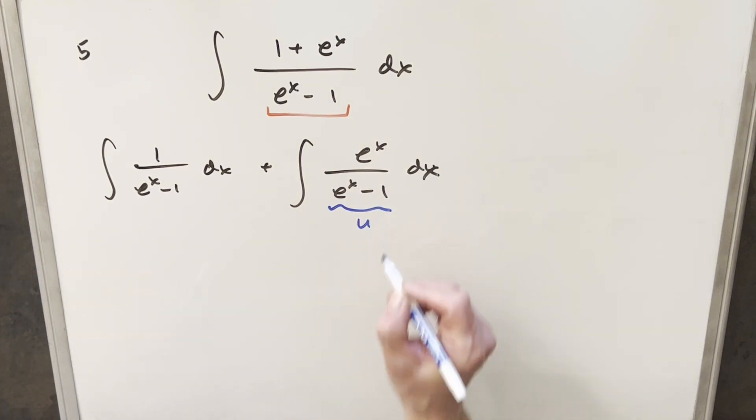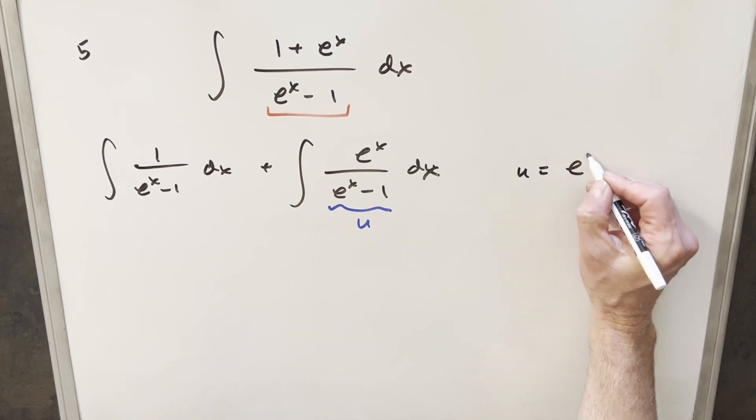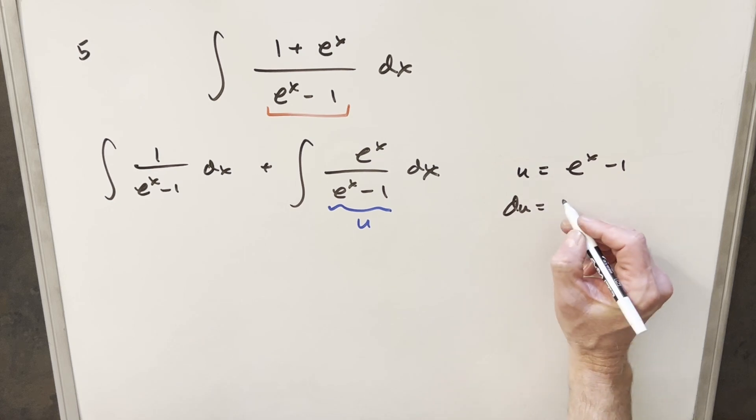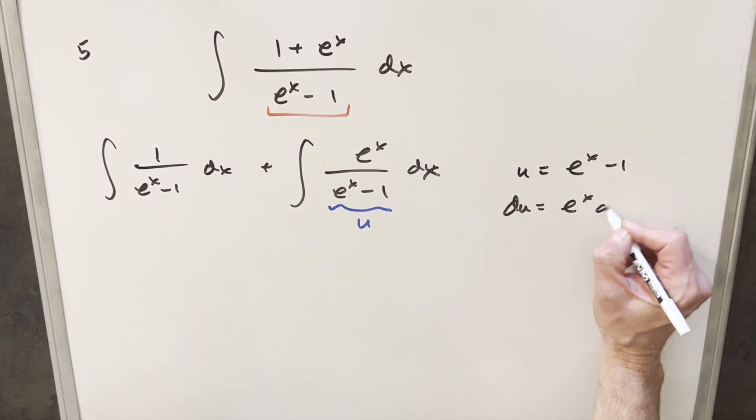So for this one, we'll just go ahead and call this the u. So we'll have u equals e to the x minus 1, du equals e to the x dx.